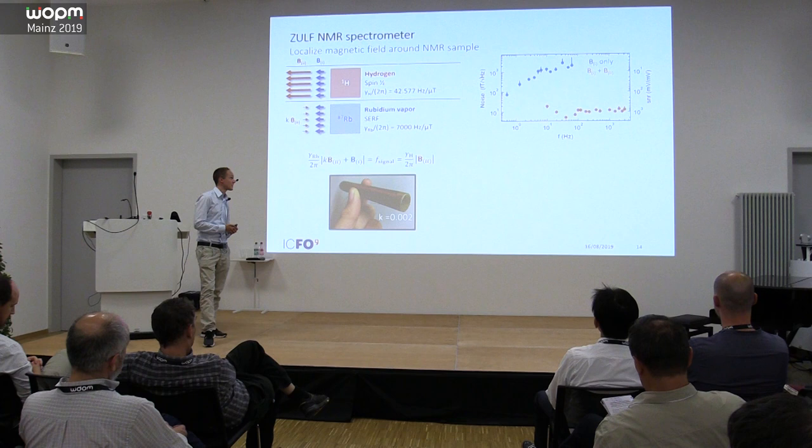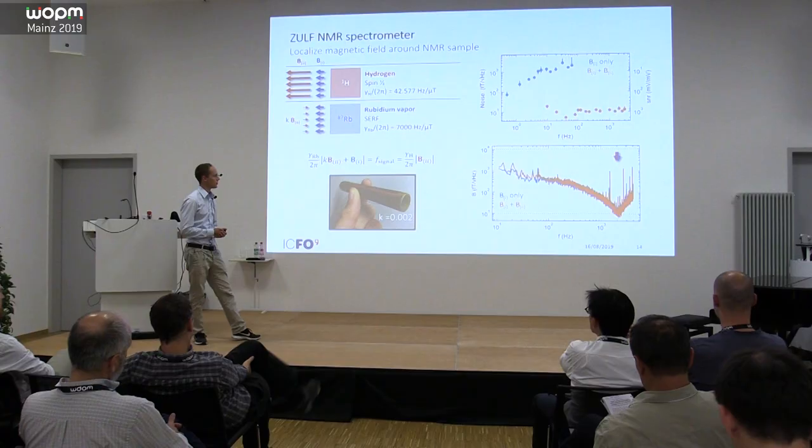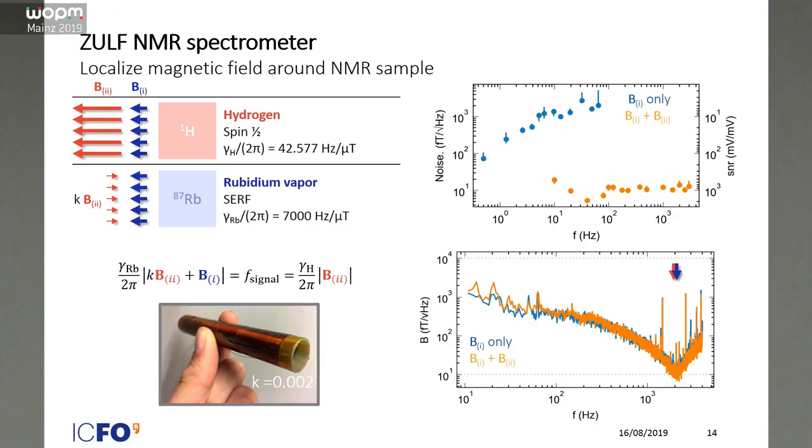You maybe think of putting an additional solenoid in the magnetic shield would produce or would create some additional noise. We actually measured the noise characteristics with only one field and with both fields, and we didn't see much of a difference. So that coil doesn't seem to produce much additional noise in the spectrometer.